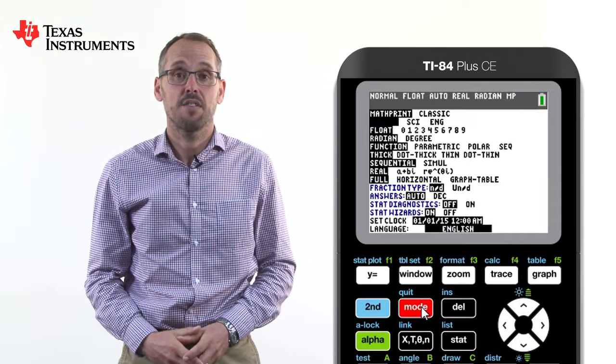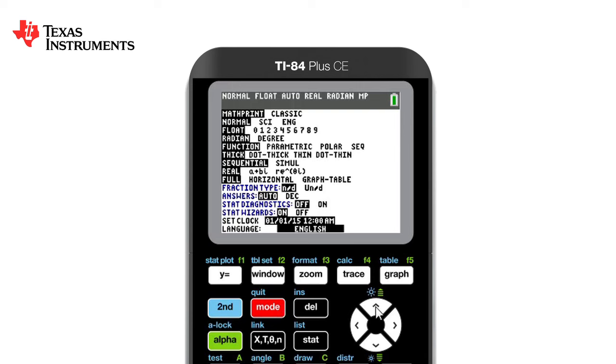You will notice that the calculator is currently in math print which is a much nicer more natural way of seeing the calculations. The answers are given as normal values rather than in scientific or engineering mode and we are on float rather than giving our answers in a certain number of decimal places.